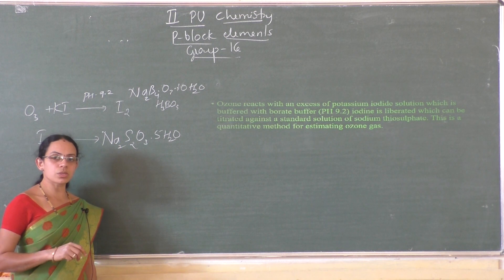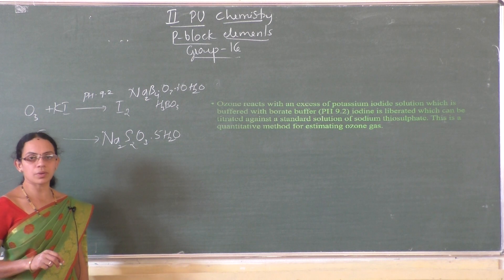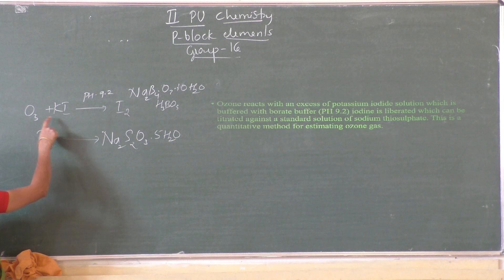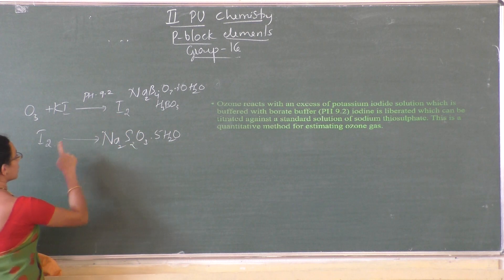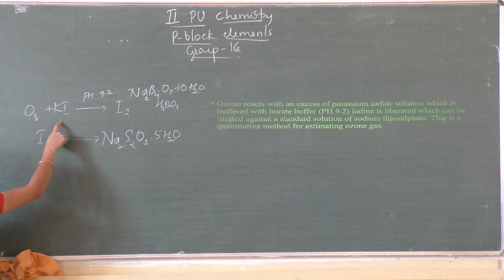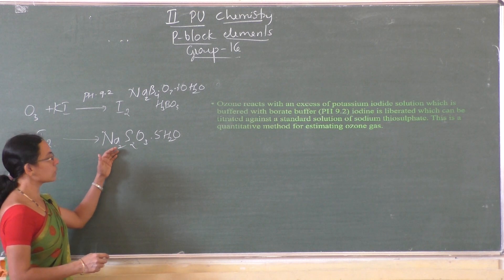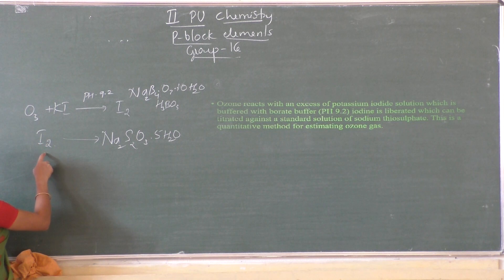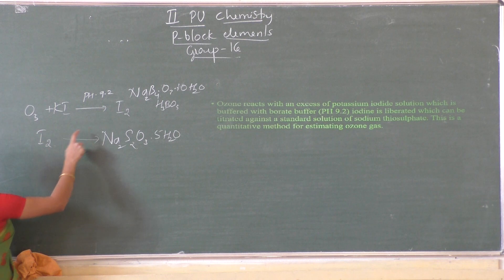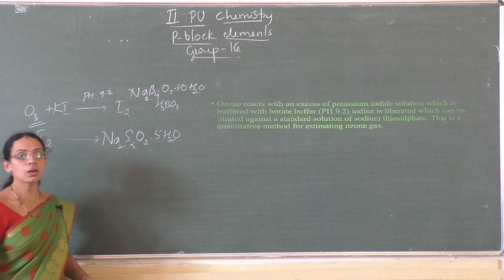A buffer is a solution which has the capacity to resist change in pH by adding a little amount of an acid or a base. When ozone reacts with excess potassium iodide in the presence of borate buffer it liberates iodine. That liberated iodine is titrated against sodium thiosulfate solution. By knowing the amount of sodium thiosulfate consumed during titration we can get the amount of iodine liberated, and from that we can get the amount of ozone present in the given sample.